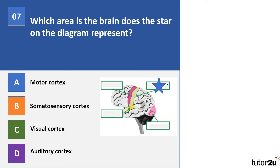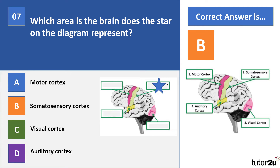Question seven. Which area of the brain does the star on the diagram represent? A: the motor cortex; B: the somatosensory cortex; C: the visual cortex; D: the auditory cortex. The correct answer is the somatosensory cortex, which sits right next to the motor cortex, separated by the central sulcus. You're required to know where these brain areas are — for diagram labelling questions — and also to describe what each area does, i.e. their functions.